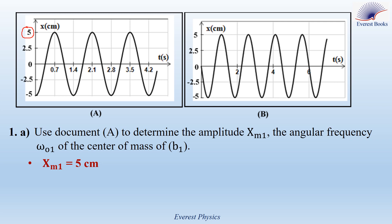Now, to determine the angular frequency, we have to determine the natural period because it can be read directly from the graph. As you see, x starts with a value of minus 5 cm, then it increases to 5 cm, and then decreases back to minus 5 cm after a time interval of 1.4 seconds. So the natural period of oscillation of pendulum A is equal to 1.4 seconds.